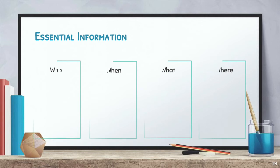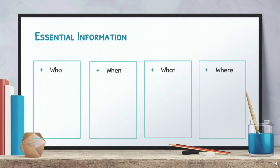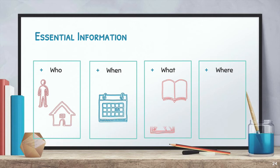Now that you've seen some examples, what do you think is essential information? What do you need to know to find someone else's source? No matter what style you're using, a citation will usually include this information: who, when, what, and where. Who wrote it? This can be a person, a group of people, or an organization like the Texas Education Agency.